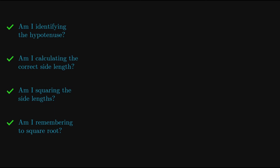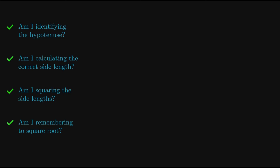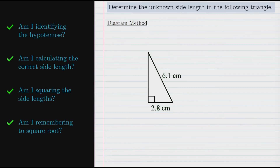So let's work through an example and see where these issues can creep up. In this problem we need to determine the unknown side length in the given triangle. First we'll consider the diagram method, and after that we'll take a look at the algebra method.